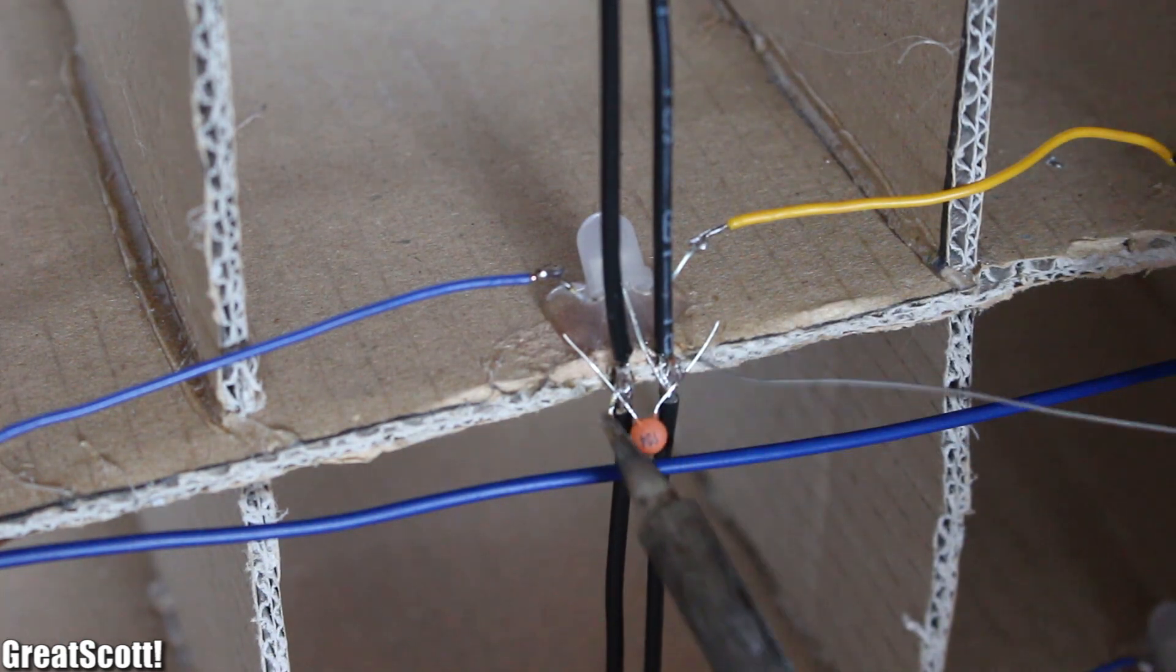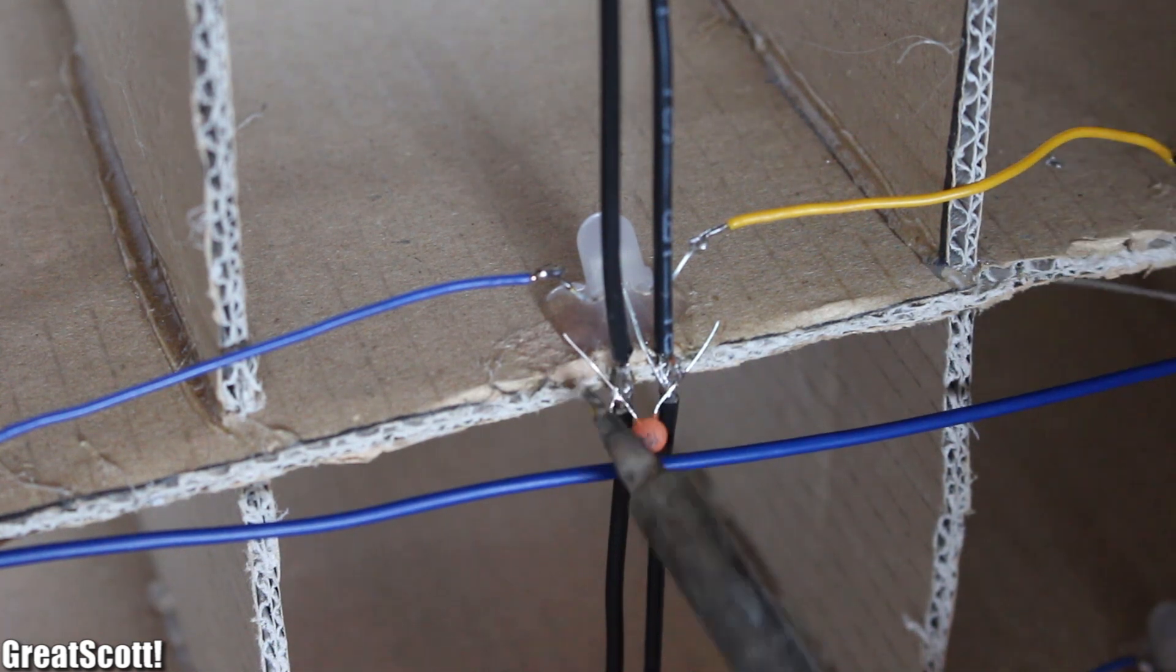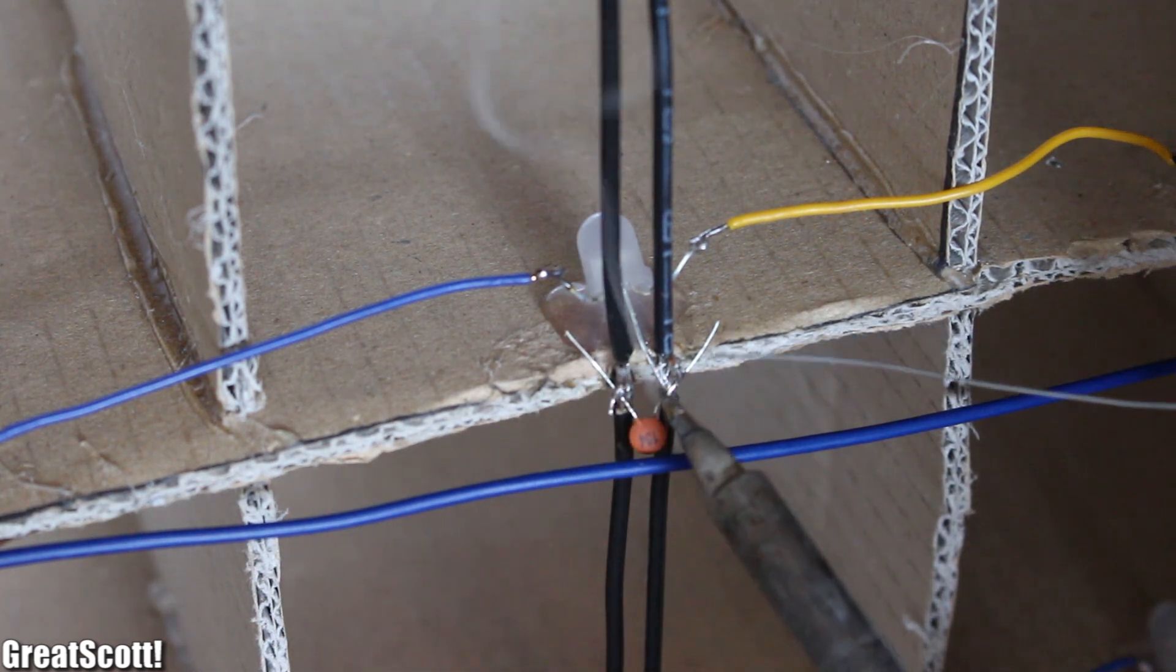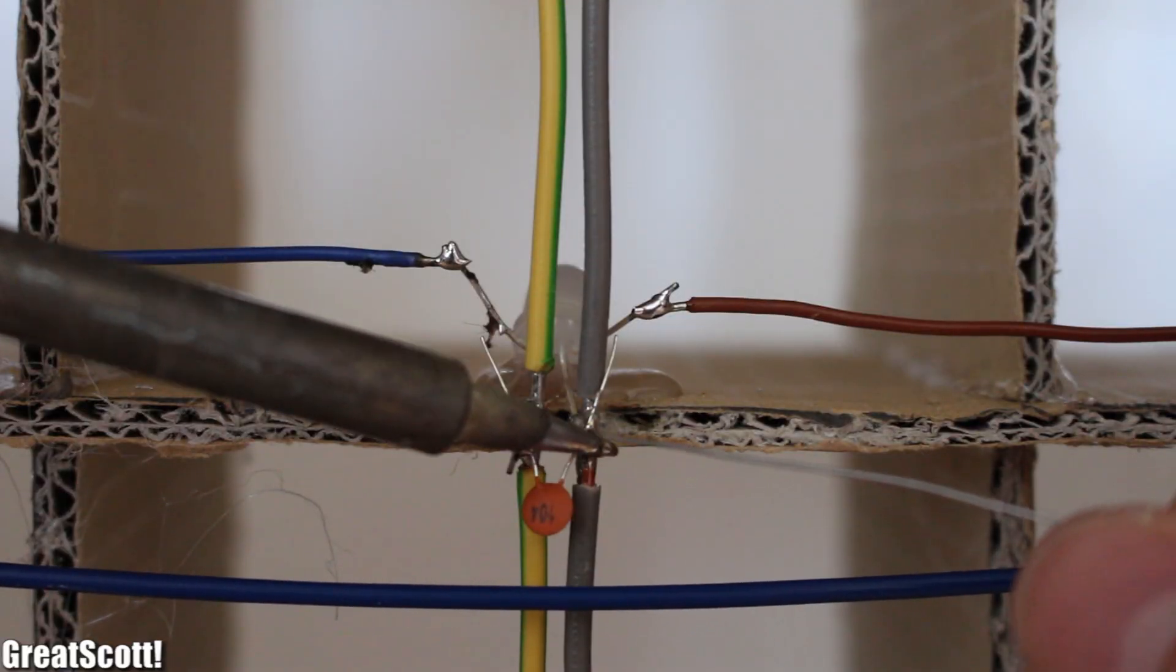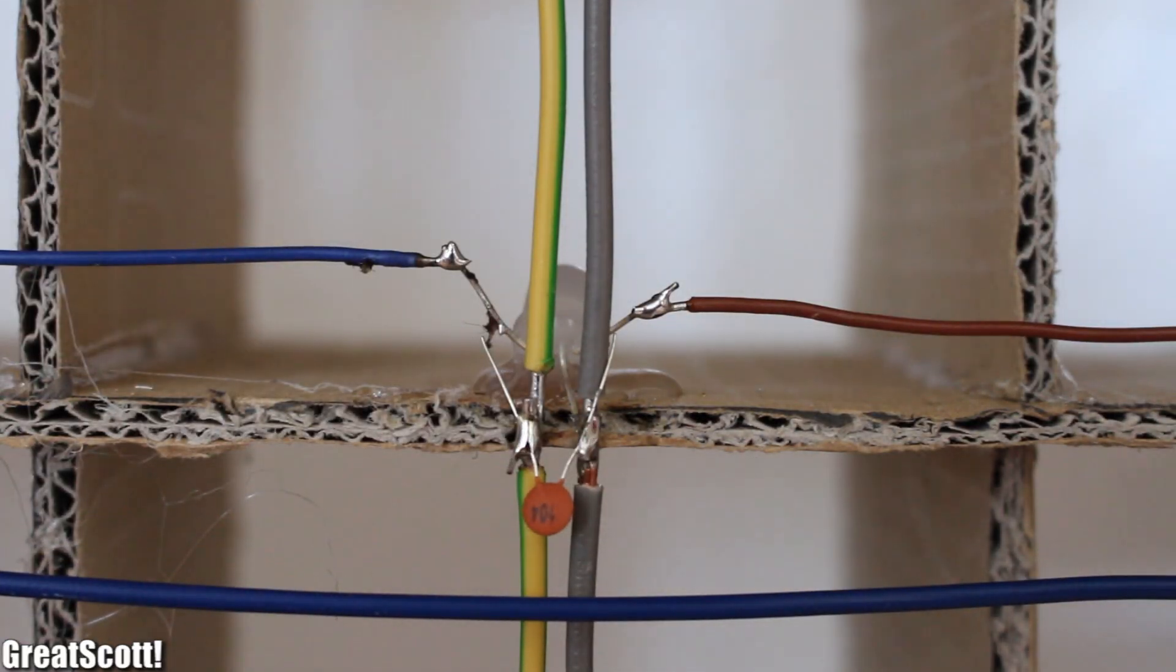After the soldering for the data wire is done, it is time for more soldering. With the 100nF capacitors. You see a pattern here? I soldered them closely to the VDD and ground pin of each LED. Okay. Almost done.